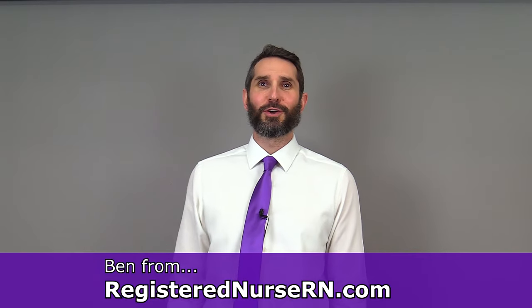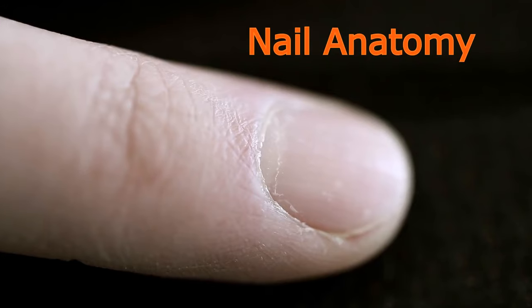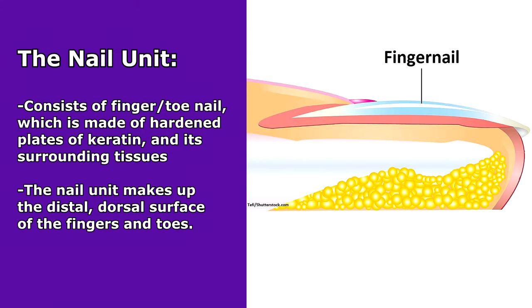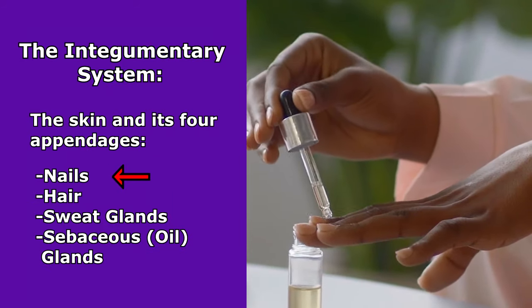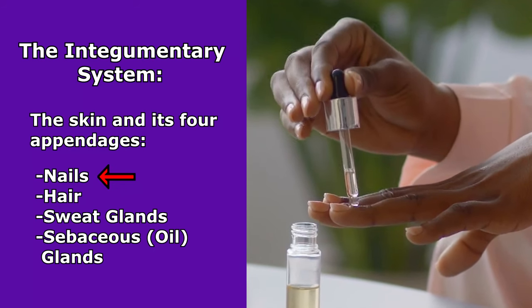Hey everyone, this is Ben with RegisteredNurseRN.com and in this anatomy lesson, I'm going to talk all about the anatomy of a nail. The nail unit consists of the fingernail, which is made of hardened plates of keratin and its surrounding tissues that make up the distal dorsal surface of the fingers and toes. Nails are one of four main appendages that, along with the skin, make up the integumentary system.